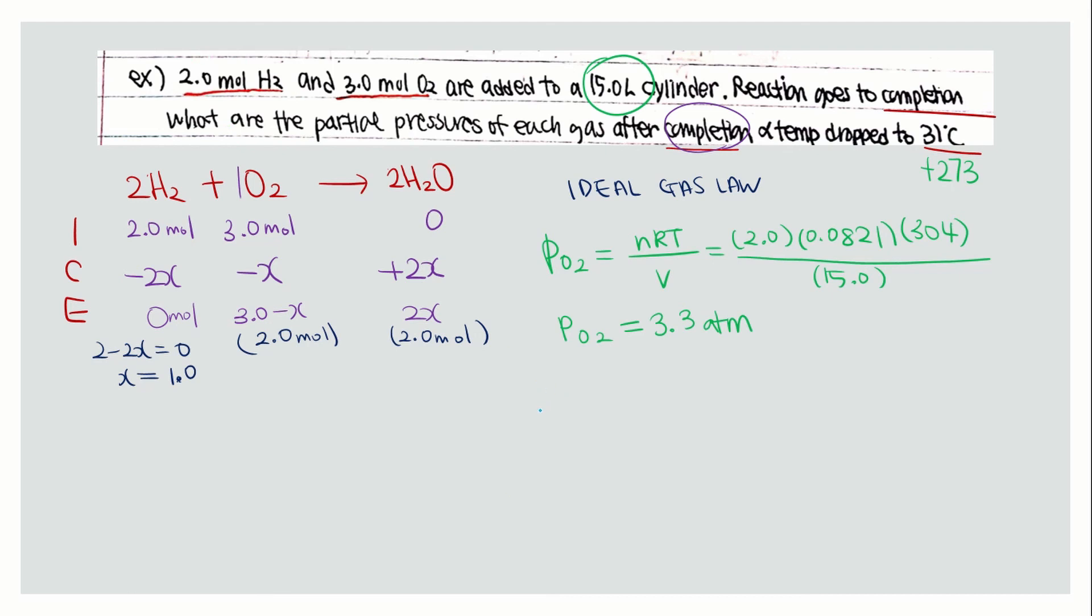Next is for water. You use the ideal gas law as well, nRT over V. You have 2.0 moles and the same R value over volume. Because you have the same number of moles, you also have the same partial pressure as oxygen, which is 3.3 atm.